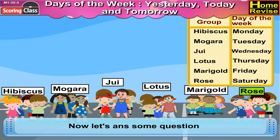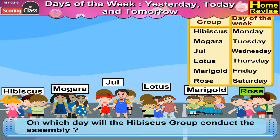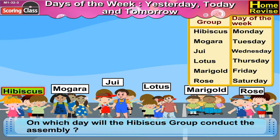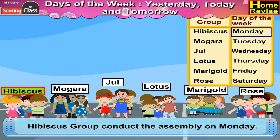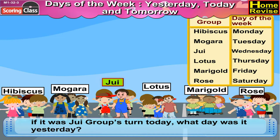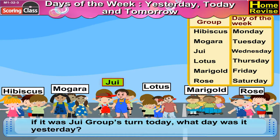Now let us answer some questions. On which day will the Hibiscus group conduct the assembly? That's correct — it is Monday. The Hibiscus group will conduct the assembly on Monday. If it was the Zui group's turn today, what day was it yesterday?